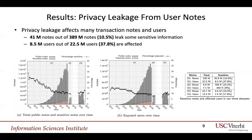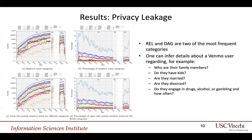Using Senmo, our findings are that 41 million notes out of 389 million notes — roughly 10.5% — leak sensitive information. 8.5 million users out of 22.5 million users, roughly about 38%, are affected. So about two in five users posted at least one sensitive note. Among the sensitive notes that users posted, relations and drug, alcohol, and gambling are two of the most frequent categories. One can infer details about a Venmo user such as who their family members are, whether they have kids, are married, or divorced, and whether they engage in activities like drugs, alcohol, or gambling, and how often.